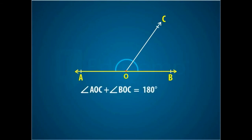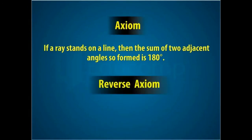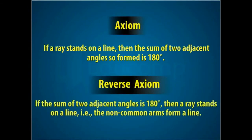If a ray ends on a line, the sum of two adjacent angles is 180. If the sum of two adjacent angles is 180, then the non-common arms form a line.